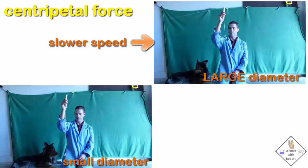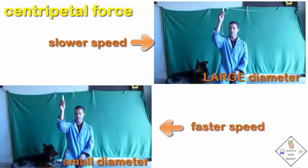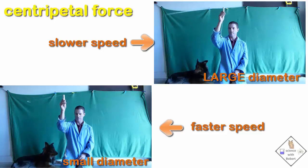When the circular path is made small, a faster speed is necessary to achieve a centripetal force equal to the weight of the 10 washers. That's pretty cool!